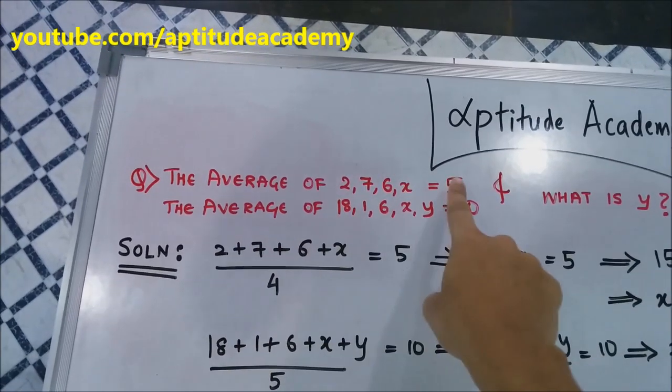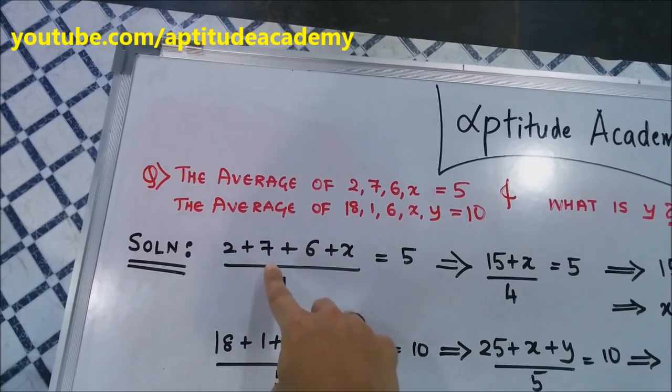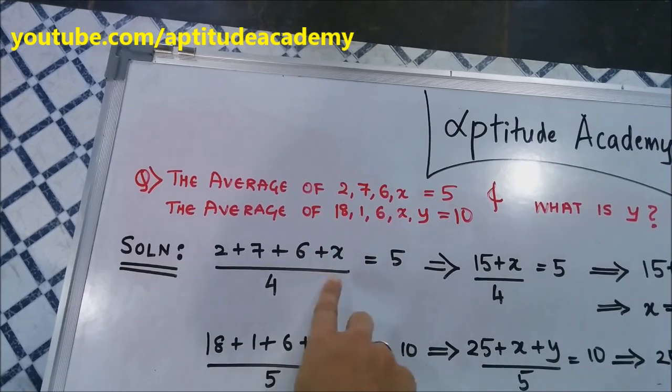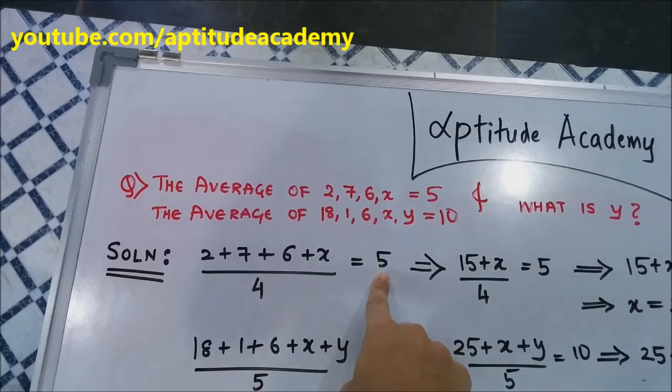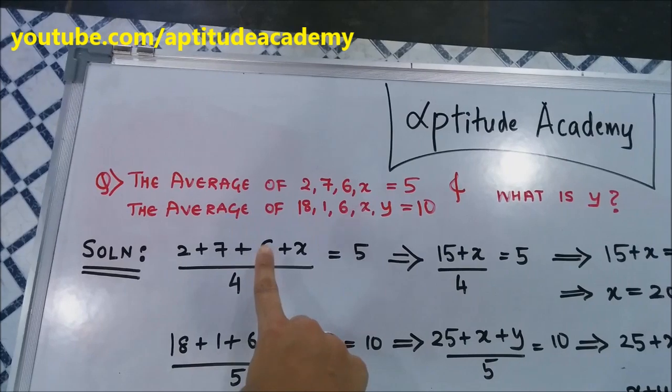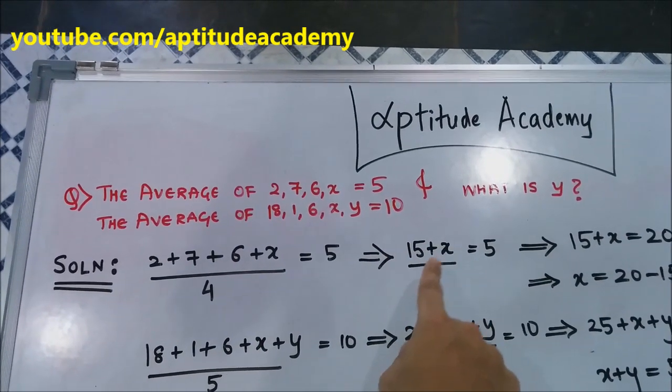Now see the first line. It said that the average of 2 plus 7 plus 6 and x divided by 4, that is the average, is equal to 5. Now, 2 plus 7 is 9, 9 plus 6 is 15. So, 15 plus x by 4 is equal to 5.